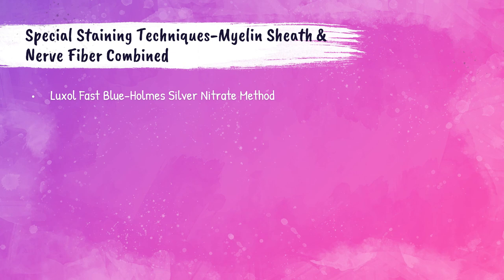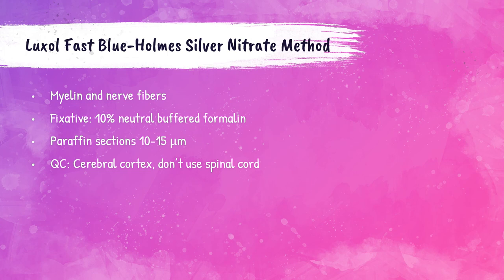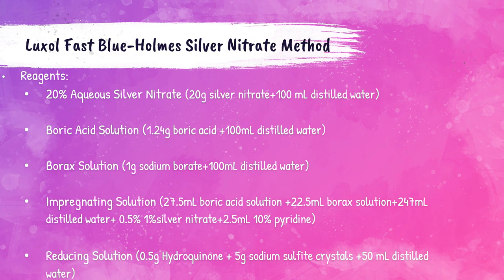There is one stain for both myelin sheaths and nerve fibers combined: the Luxol Fast Blue Holmes silver nitrate method. Fix in 10% NBF, cut at 10–15 microns; QC tissue is cerebral cortex — spinal cord cannot be used because most axons are in cross section. Reagents include 20% aqueous silver nitrate, boric acid solution, borax solution, an impregnating solution, reducing solution, 0.2% gold chloride, 2% oxalic acid, 5% thiosulfate, 1% Luxol Fast Blue, and 0.05% lithium carbonate.